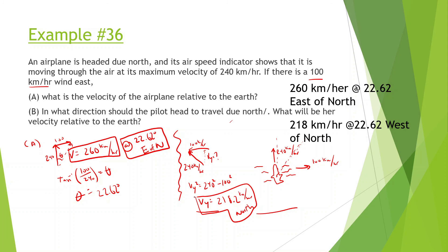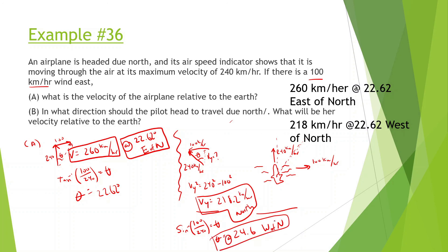Now we also need the direction the pilot should head. We use sine inverse for this: sine inverse of opposite 100 divided by hypotenuse 240, which gives us theta. That comes out to 24.6 degrees, and this is going to be west of north. So she should head at 24.6 degrees west of north to cancel out the wind and travel due north.